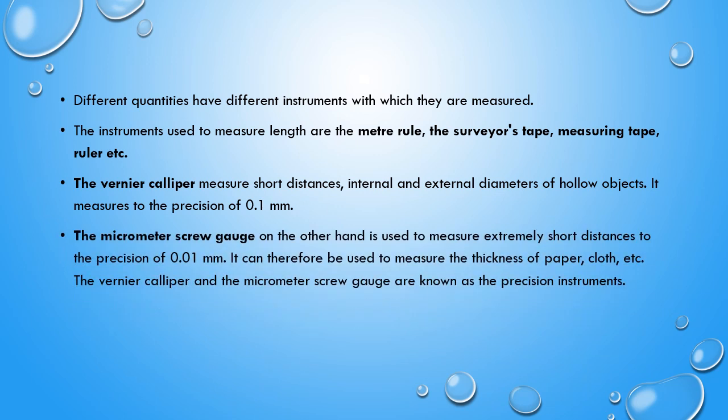We also have the micrometer screw gauge, which is used to measure extremely short distances to a precision of 0.01 mm. It can be used to measure very small objects — for example, the thickness of a paper or cloth. Unlike the vernier caliper which is precise to 0.1 mm, the micrometer screw gauge is precise to 0.01 mm.